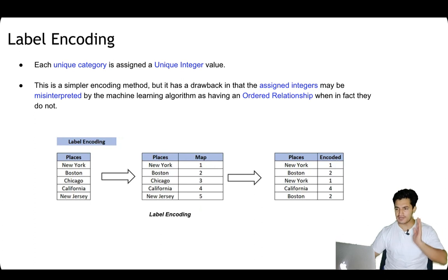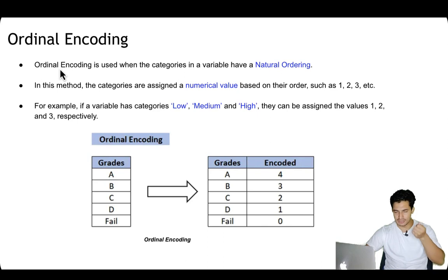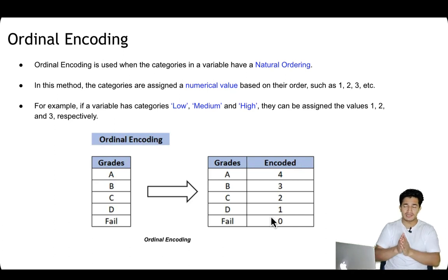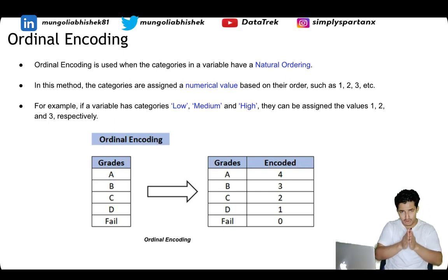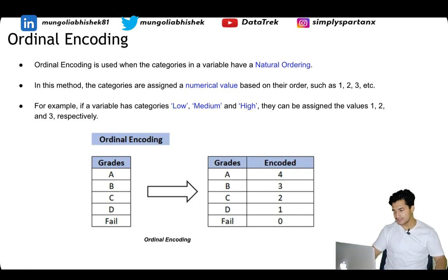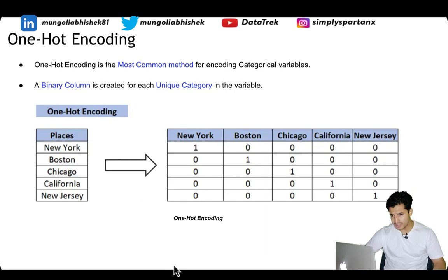Next is ordinal encoding. As the name suggests, it's used for ordinal categorical variables where there is some natural ordering. For example, categories low, medium, high can be assigned values 1, 2, 3. Similarly, grades A, B, C, D: A can be assigned 4, B three, C two, D one, and failed zero. It is similar to label encoding, but ordinal encoding is for variables that do have an ordering, whereas label encoding is for nominal variables. Method-wise both assign integers.